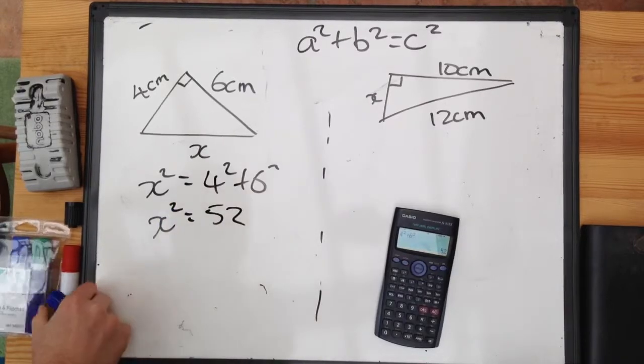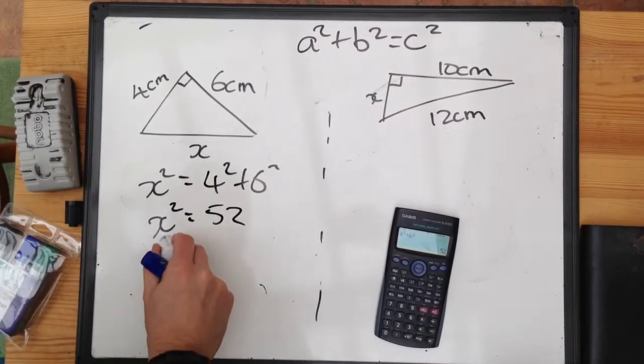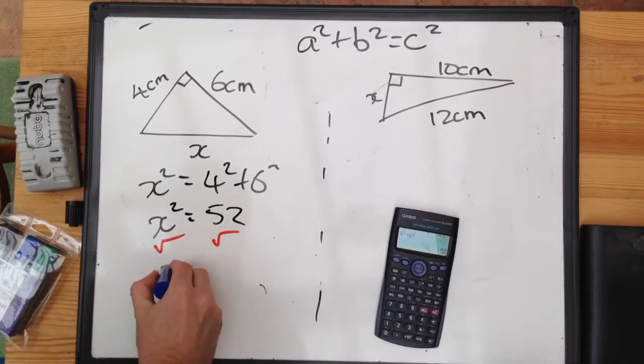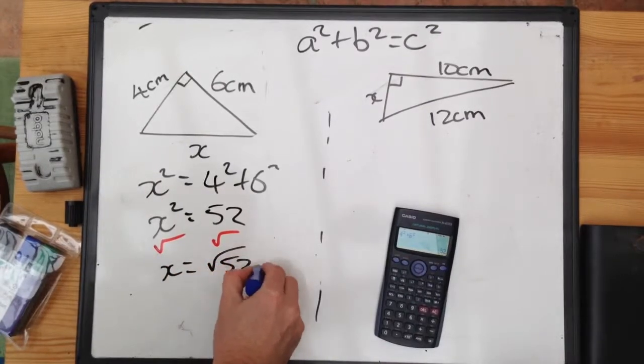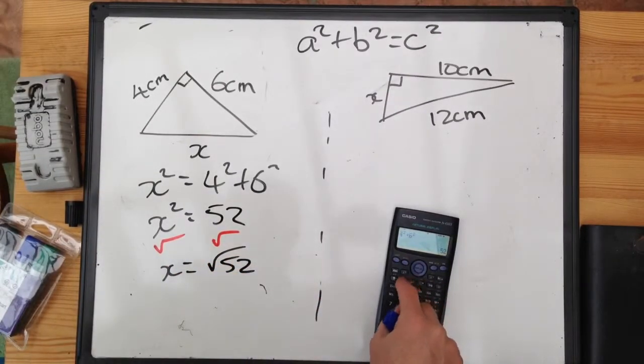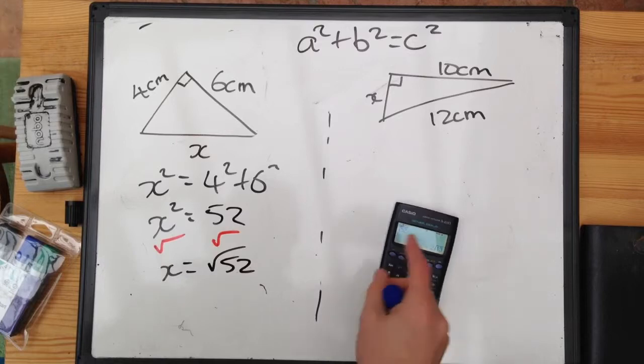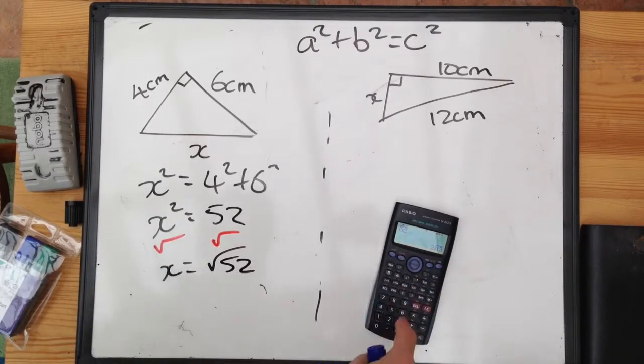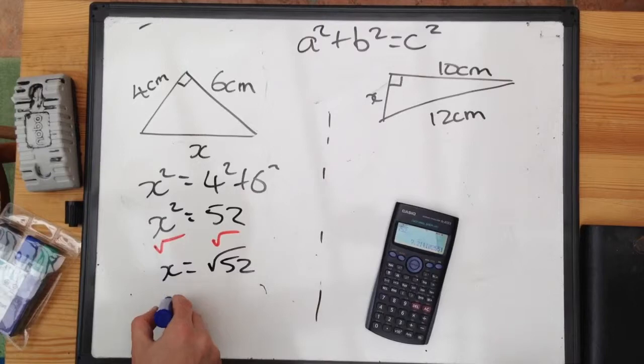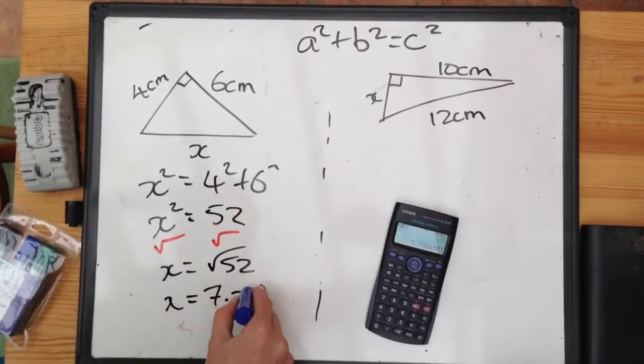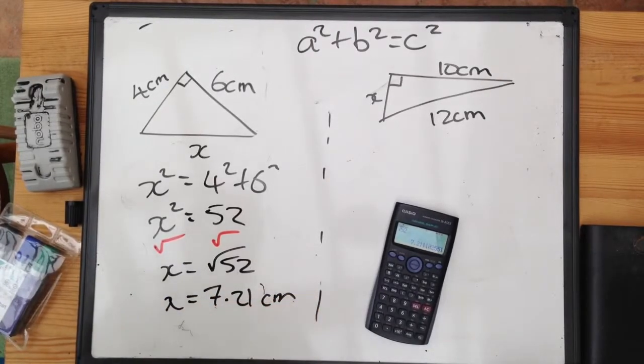To remove the squared, we square root both sides. And we end up with X is equal to the square root of 52. You can put that into your calculator, and you'll end up with 2 root 13, if you've got one of these clever ones. To change it to a decimal, press the SD button, and we get that X is equal to 7.21 centimetres to three significant figures. So that's relatively straightforward.